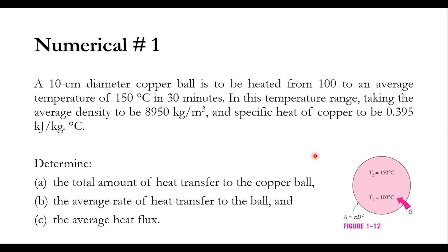In numerical number one, we have been given a 10 centimeter diameter copper ball which is to be heated from 100 to an average temperature of 150 degree centigrade in 30 minutes. In this temperature range, the average density is 8950 kg per cubic meter and the specific heat of copper is 0.395 kilojoule per kg degree centigrade.